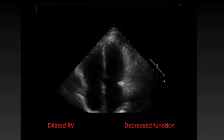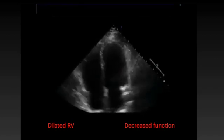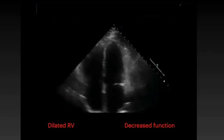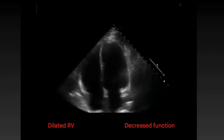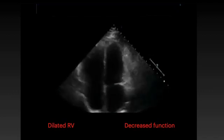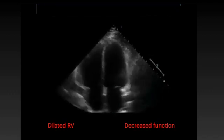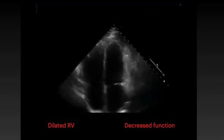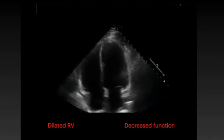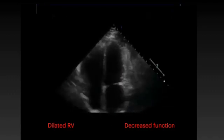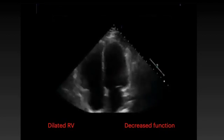The main findings of right heart strain in PE are a thin-walled dilated right ventricle that looks more rounded than triangular. When the RV gets big, it can cause the septum to move into the left ventricle. If the right ventricular wall is thick, it's more likely that the enlarged right ventricle is from chronic lung disease instead of something acute. You can also see decreased right ventricular function with right heart strain.